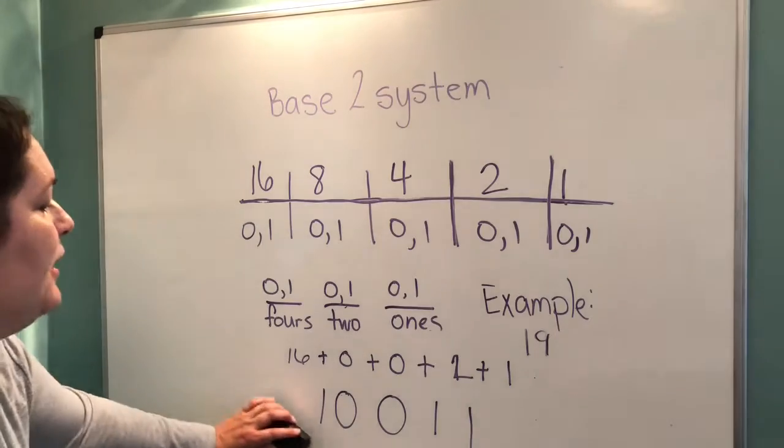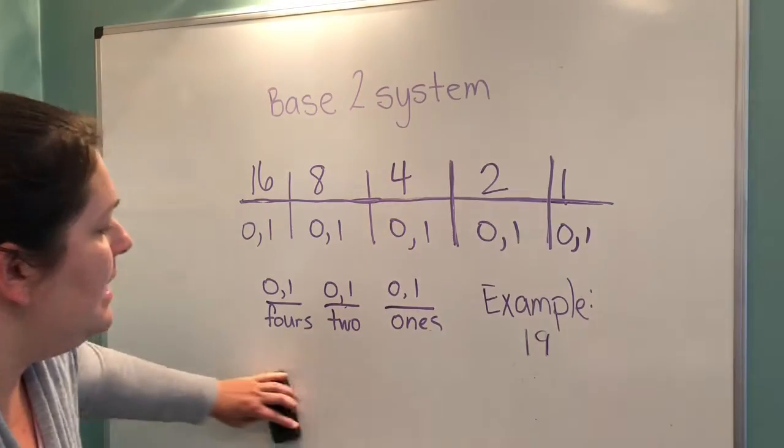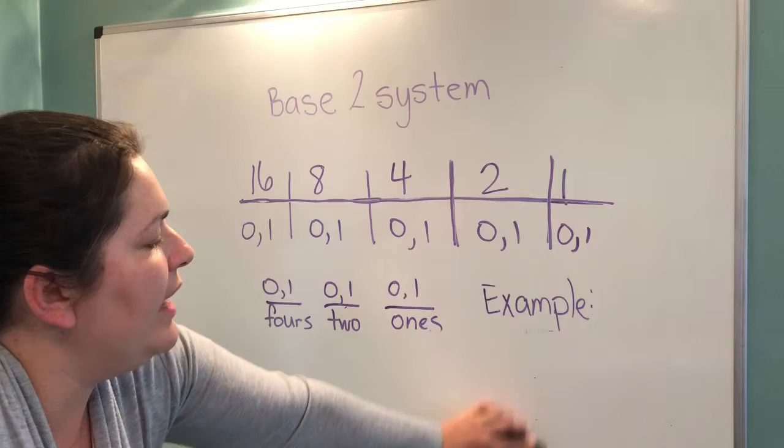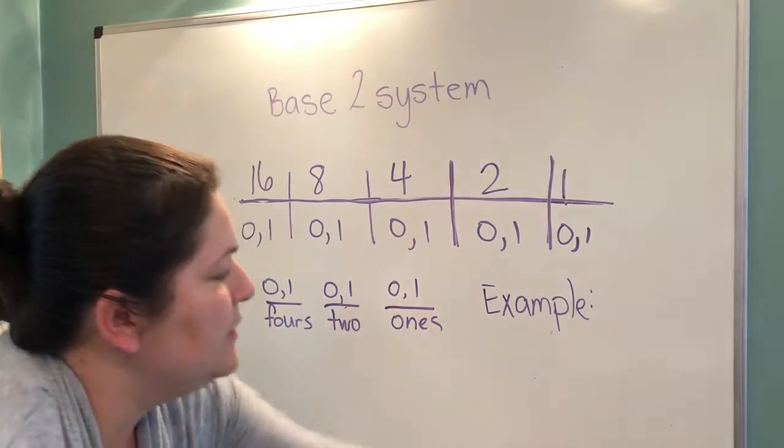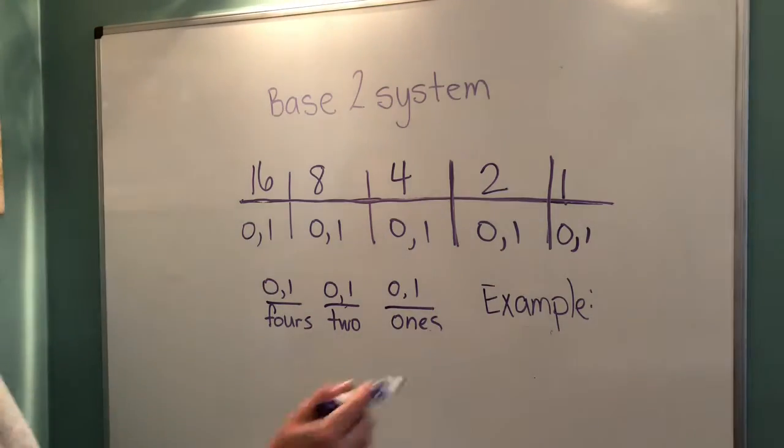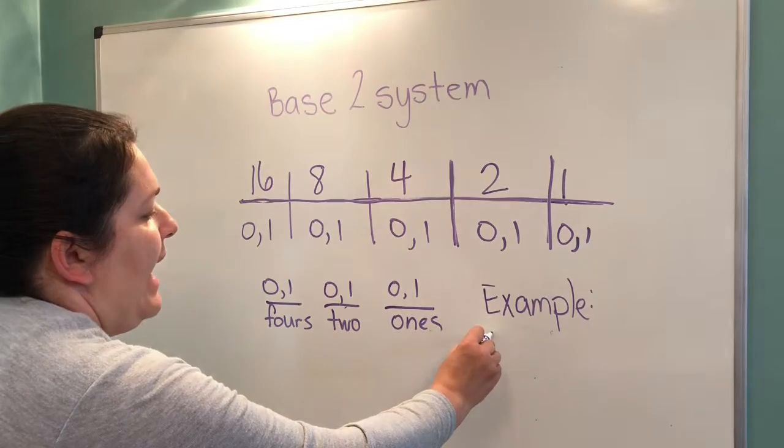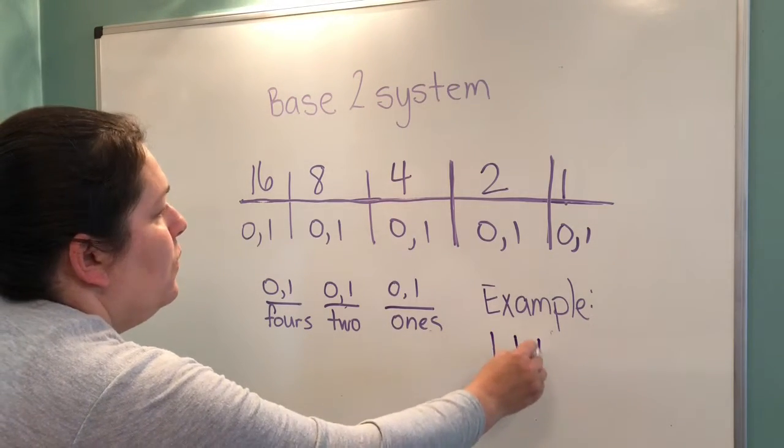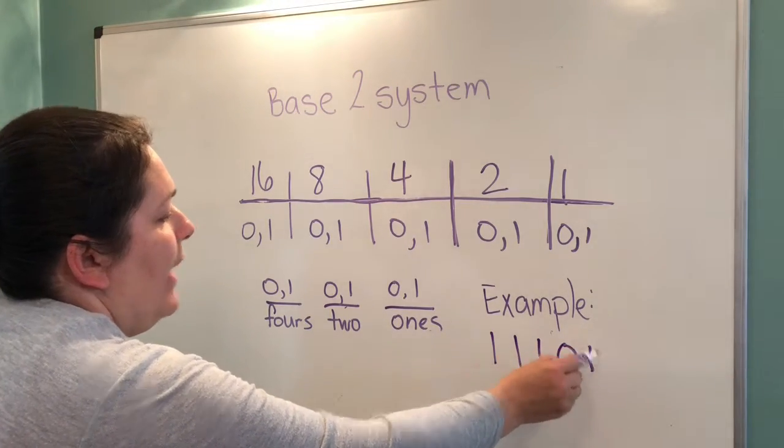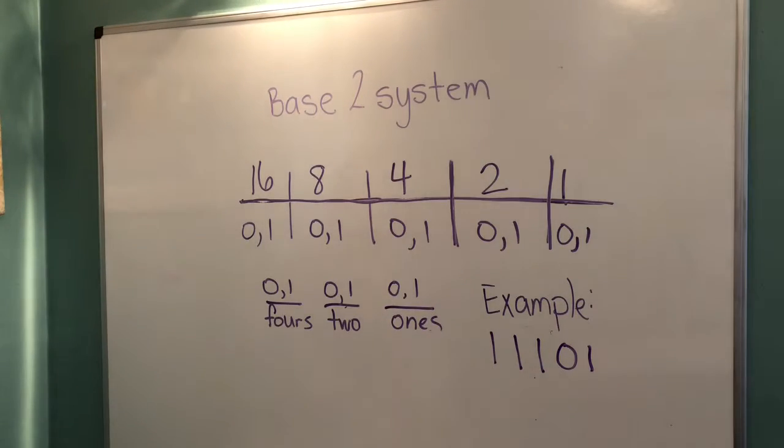Now, if you want to reverse that and you want to say, what is the value of our base 2 system number in our base 10? Let's say we have 1, 1, 1, 0, 1. This is how we go in reverse.